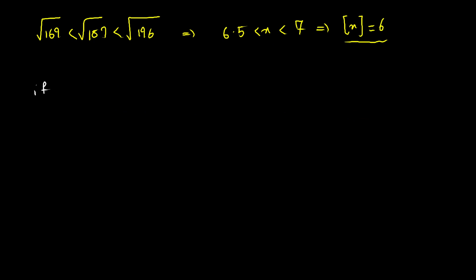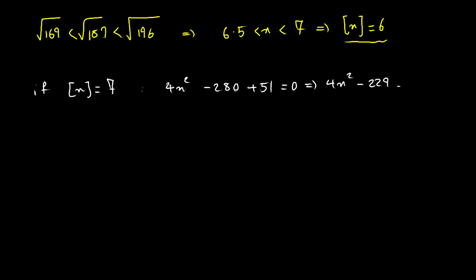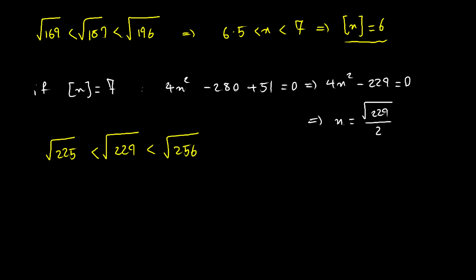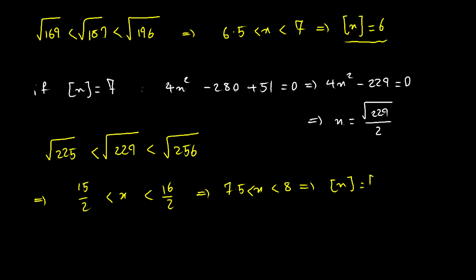Assume floor of x equals 7. We have 4x squared minus 280 plus 51 equals 0, giving 4x squared minus 229 equals 0, so x equals √229 over 2. To check: √229 lies between √225 and √256, so x lies between 15 halves and 16 halves, meaning x lies between 7.5 and 8. Therefore floor of x equals 7 — this is a valid solution.